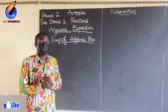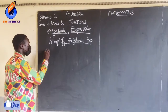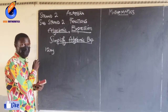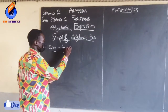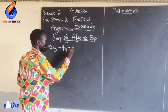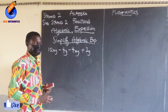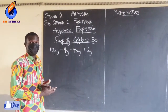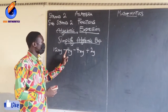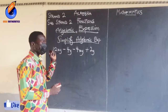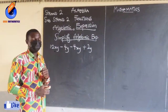We want to look at how to simplify algebraic expressions. Let's say we have 12xy minus 4y minus 4xy plus 2y. This is an algebraic expression. Why? Because there are numbers and there are alphabets, and for these alphabets we call them variables.